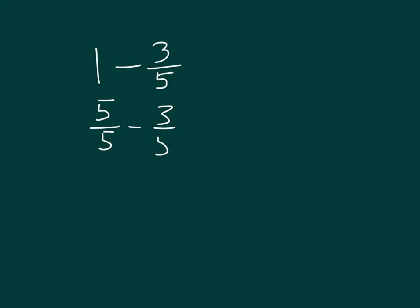What is 5 fifths minus 3 fifths? We'll have fifths still, and that is 2 fifths. Read the whole number sentence with me. 1 minus 3 fifths equals 2 fifths.